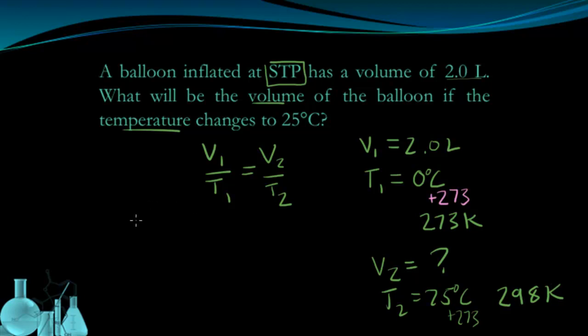Now I can go ahead and plug these things in. 2.0 liters over 273 Kelvin is equal to my new volume over 298 Kelvin. Now 2.0 liters only has two significant figures, so my final answer should only have two significant figures.